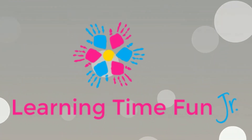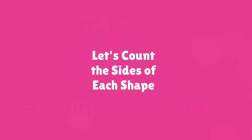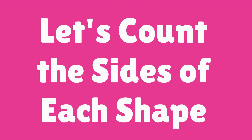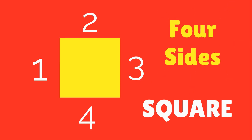Let's count the sides of each shape. How many sides does a square have? Let's count: 1, 2, 3, 4. A square has 4 sides.